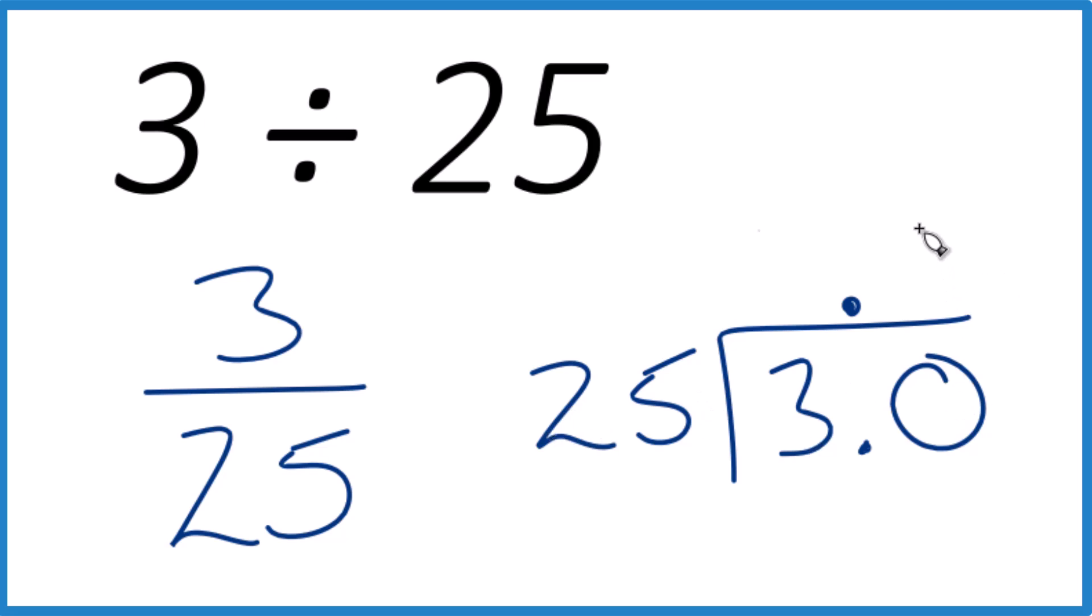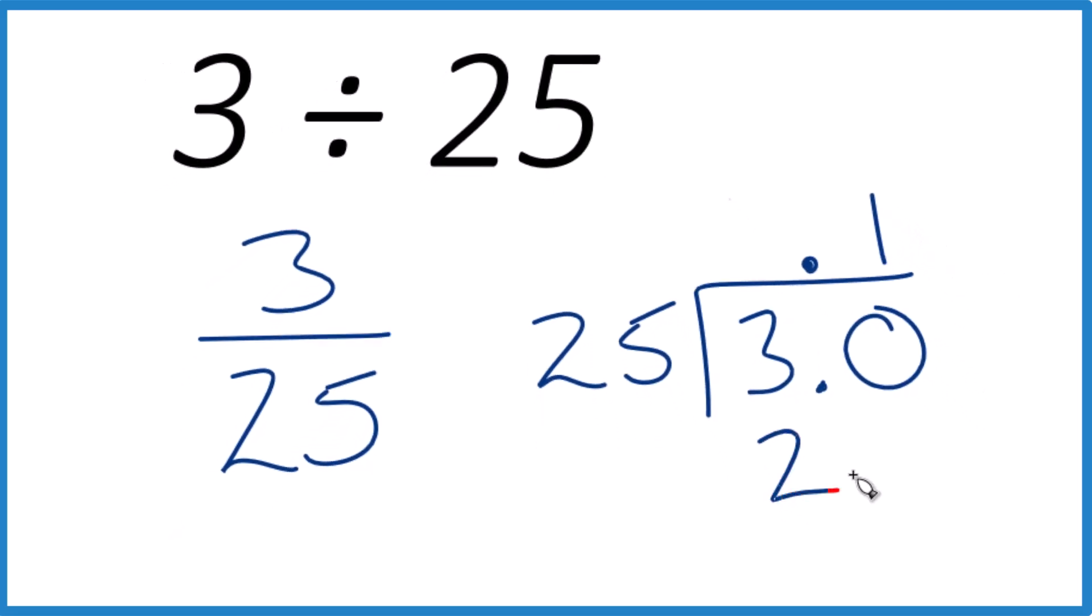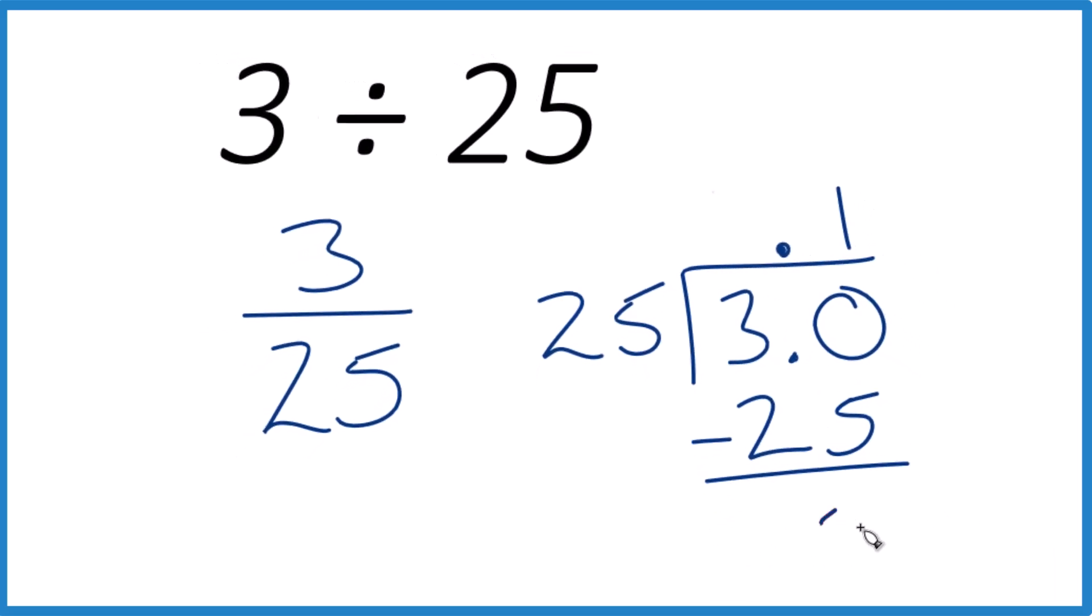Because now we have 30 and we could say 1 times 25. That's 25. We kind of ignore this here. Subtract. 30 minus 25 is 5.